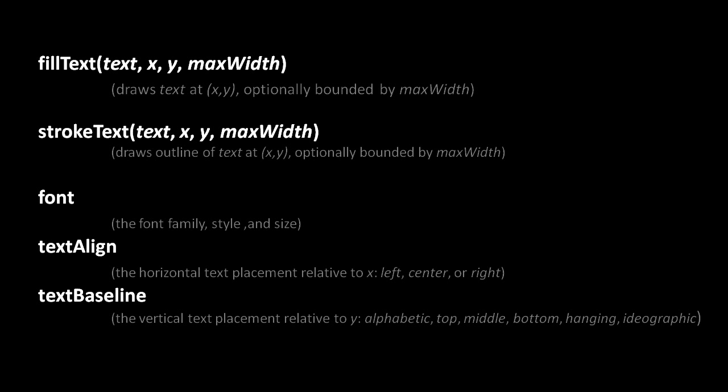Using either fillText or strokeText is very simple. You just pass in a string as the first argument of what text you want to render, you specify the starting coordinate, and optionally you can specify a max width. The idea of max width is that your font size will automatically be scaled down until the rendered text fits within that bound. These methods have no concept of line wrapping, so max width doesn't cause your text to wrap to the next line — it's always just drawing a single line of text.